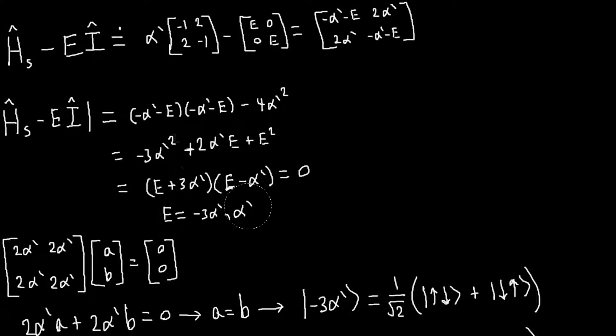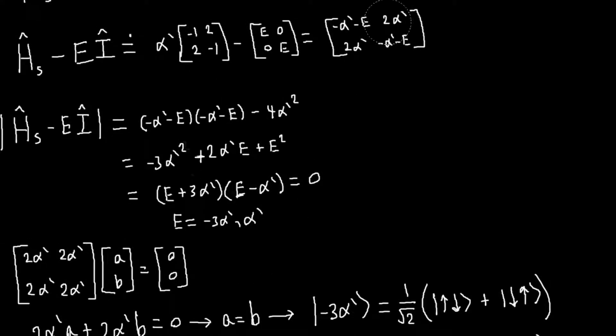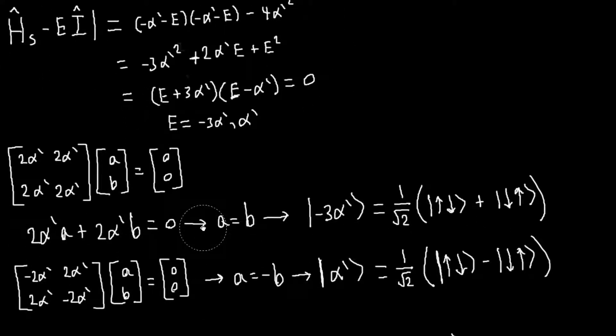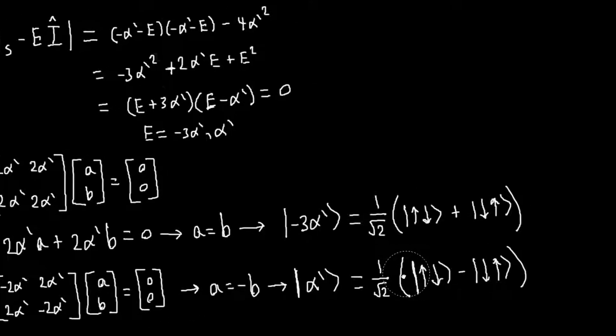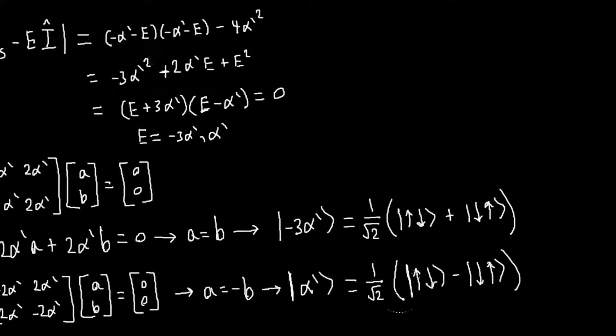And then you can plug in the other value, alpha prime here, and work it out again. And here you will get that a equals minus b. And so the other eigenvector will be this.